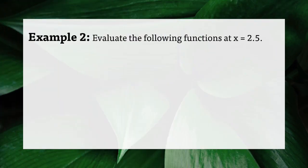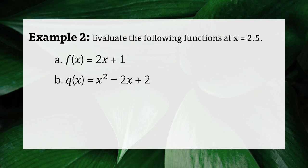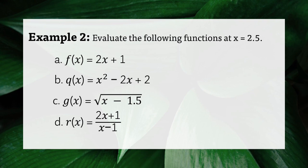Example number 2: Evaluate the following functions at x equals 2.5. Letter A: f of x equals 2x plus 1. Letter B: q of x equals x squared minus 2x plus 2. Letter C: g of x equals square root of x minus 1.5. And letter D: r of x equals 2x plus 1 all over x minus 1.